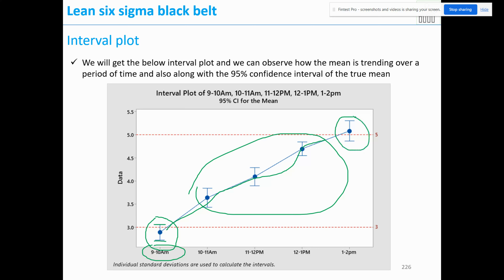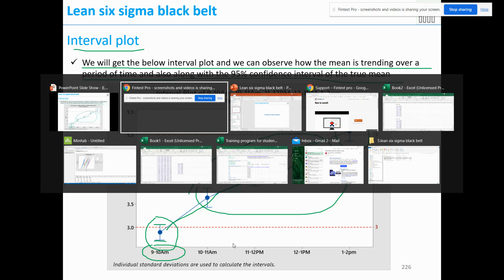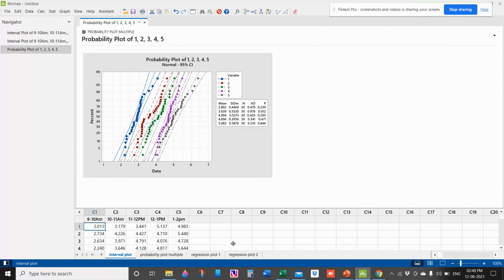From 1 to 2 p.m. there is an out-of-specification point. We get the interval plot and can observe how the mean is trending over a period of time, along with the 95% confidence interval.